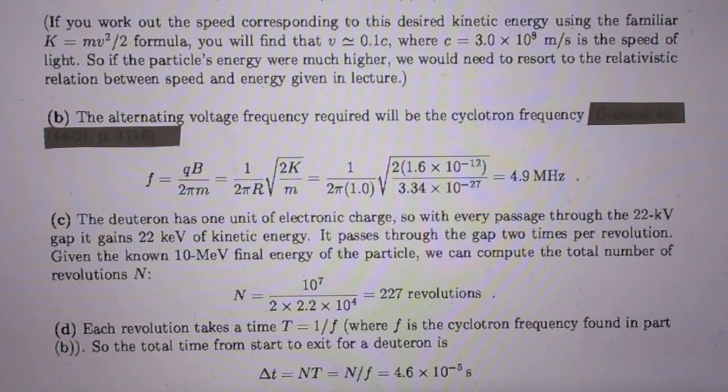Question D. Each revolution takes a time 1 over F. F is the frequency, so T is the time, 1 revolution. And F then is the cyclotron frequency which we found already upstairs.